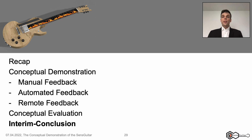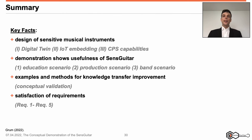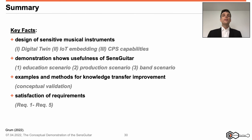Let's now conclude the conceptual demonstration of the sense guitar. As a summary, with this session we have addressed the conceptual demonstration of the sense guitar construction. We have clarified the design of sensitive musical instruments considering the concepts of: one, digital twins; two, Internet of Things embedding; three, cyber-physical system capabilities. Further, we clarified the usefulness of the sense guitar by conceptual demonstrations of knowledge transfer improvement in the common scenarios of one, education; two, production; and three, band. Finally, we identified a conceptual evaluation confirming that requirements have been satisfied without exception. From my point of view, we are best prepared for building on this and bringing the design to reality.